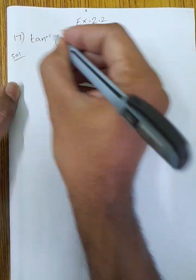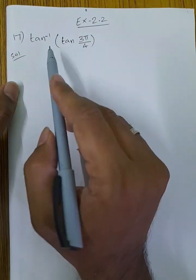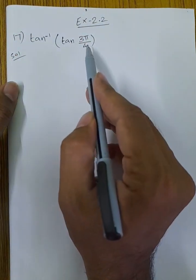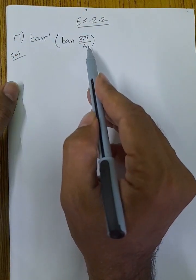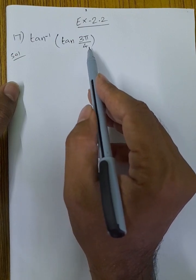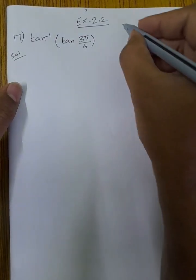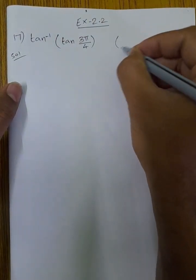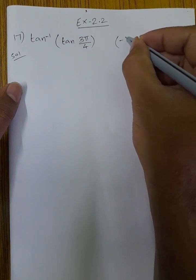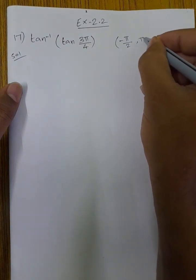We know that tan inverse of tan(θ) is equal to θ directly. But here we have 35π/4. The range of tan inverse of x is minus π/2 to plus π/2. But here there is 35π/4, which is outside this range.